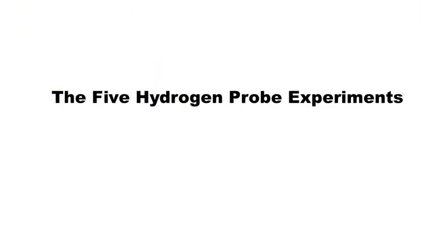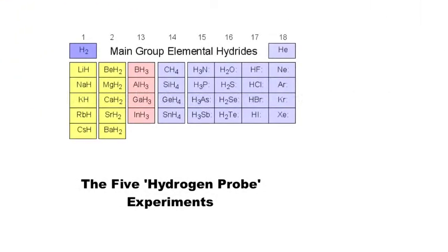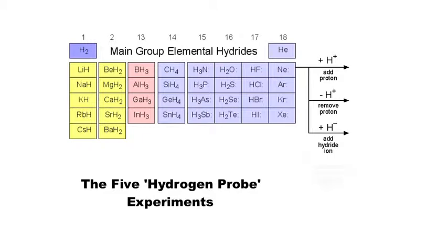We're going to take our main group elemental hydrides and perform five reactions involving hydrogen species: the proton H+, the hydride ion H−, and the hydrogen radical H•. We're going to add H+, remove H+, add H−, remove H−, and remove H•.